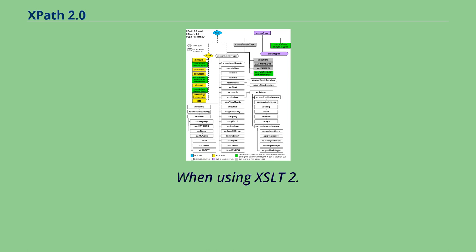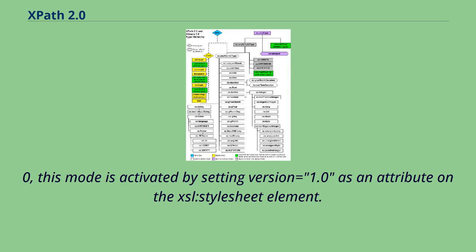When using XSLT 2.0, this mode is activated by setting version=1.0 as an attribute on the XSL stylesheet element.